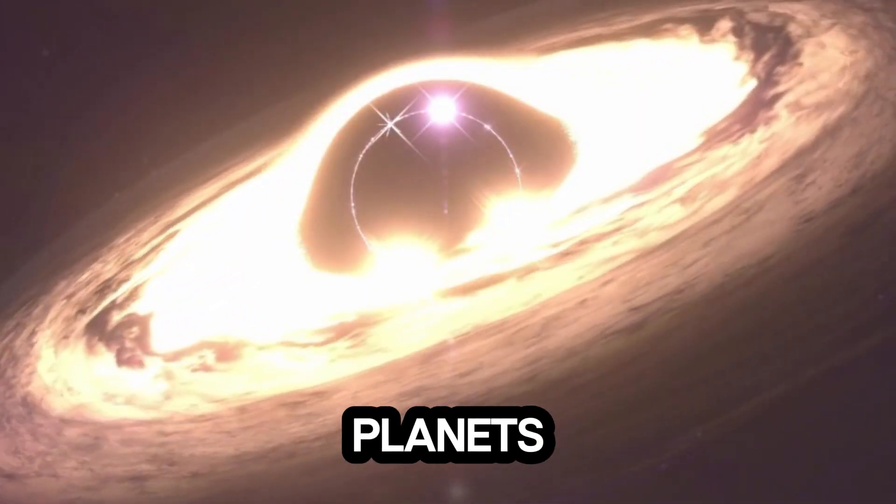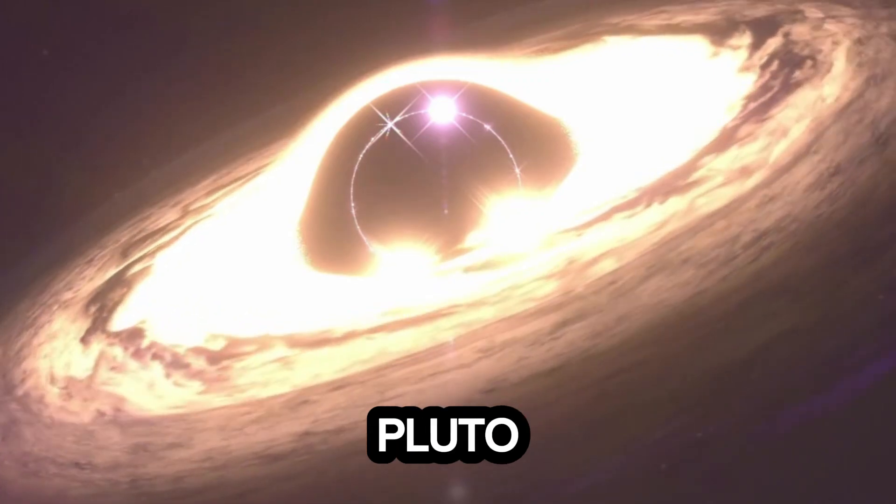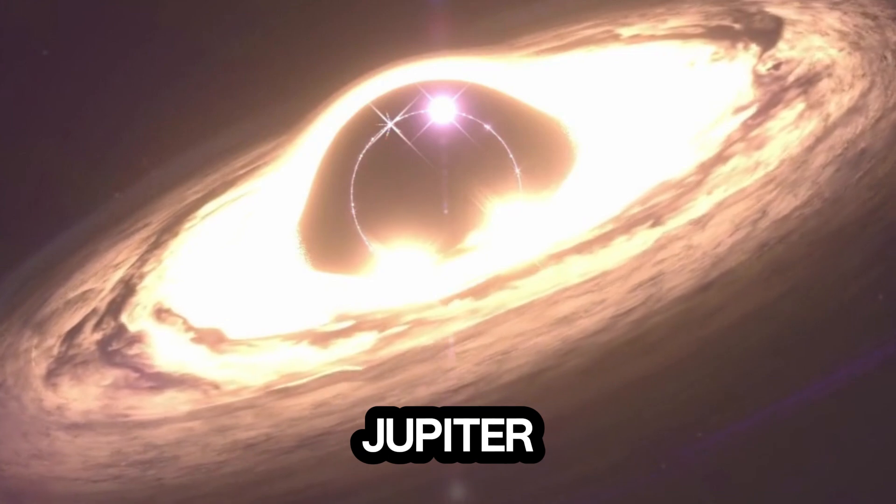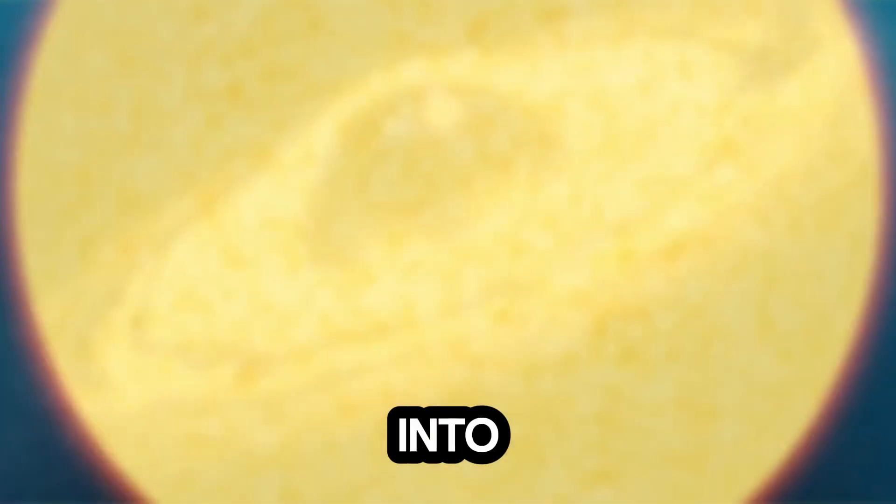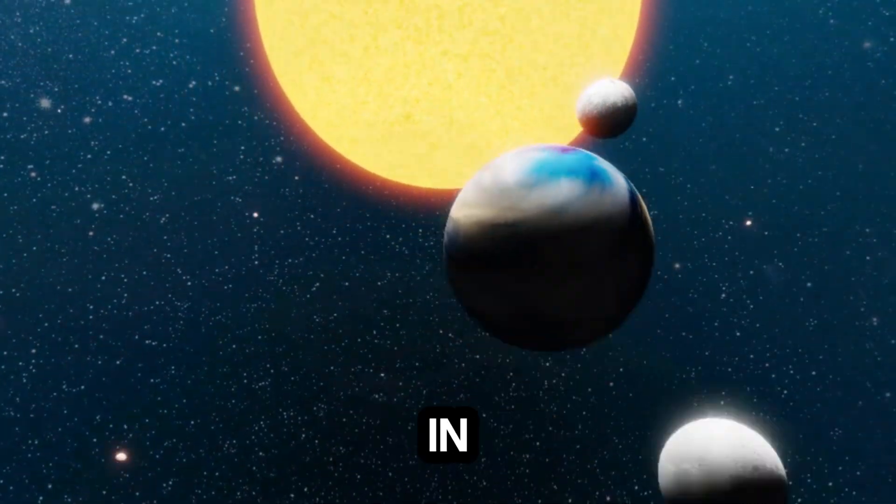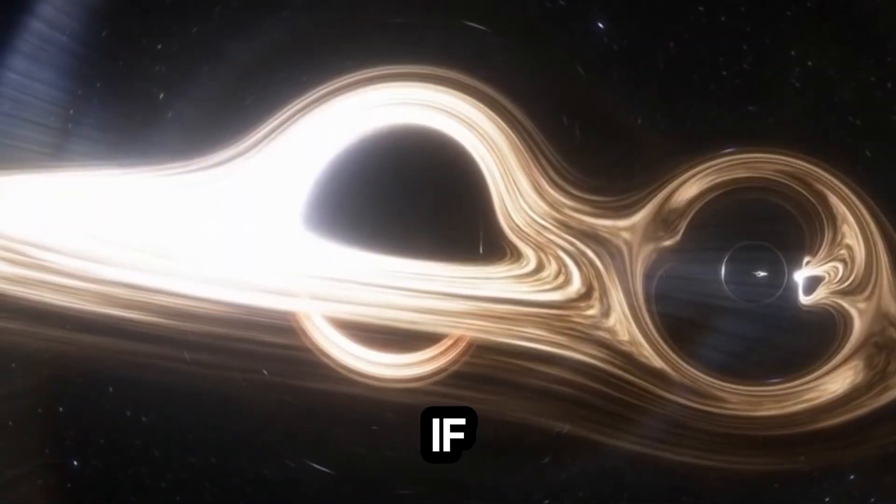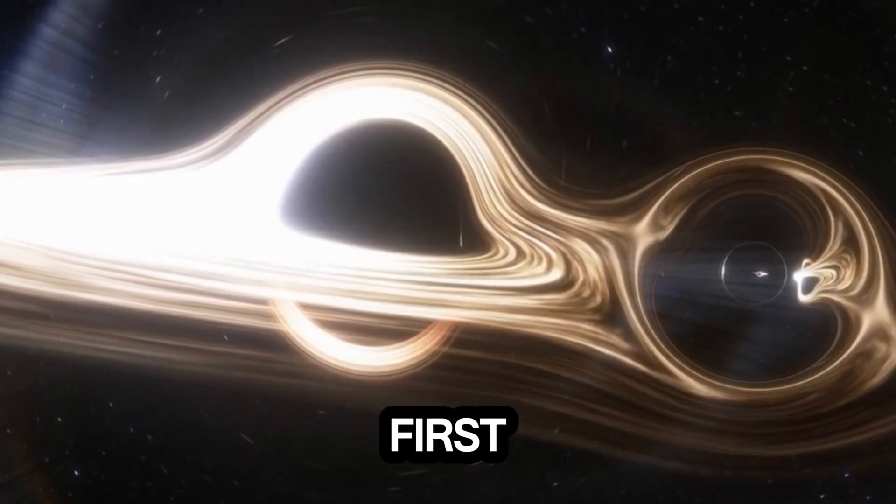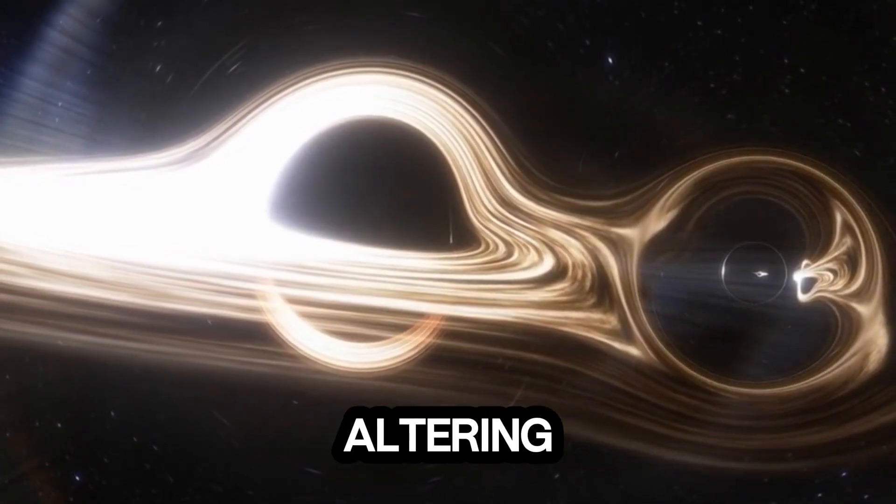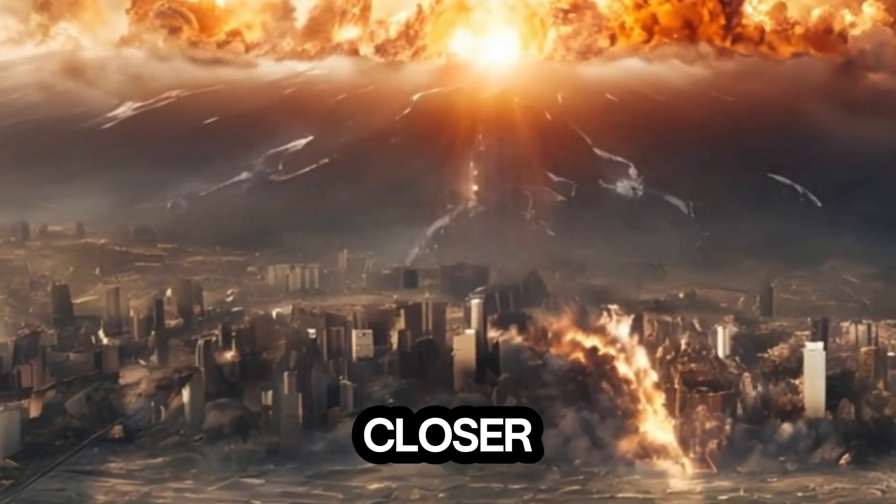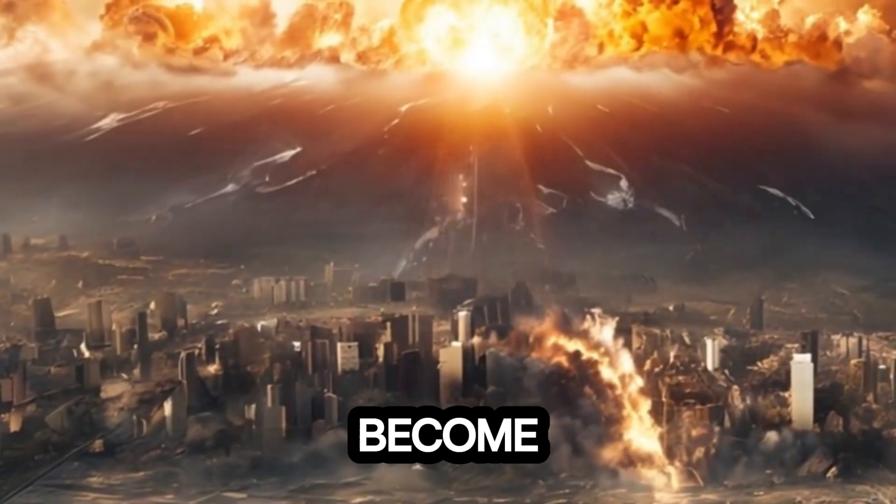Impact on the planets: planets with weaker orbits, like Pluto, would likely be slingshotted out of the solar system. Others, like Jupiter and Saturn, might get pulled into a chaotic orbit. And Earth? We wouldn't be dragged in immediately. In fact, if the black hole wasn't extremely close, we might not even notice it at first. Gravity would tug at us subtly, altering our orbit. Seasons would shift, and climate patterns would change. But the closer it gets, the worse things become.